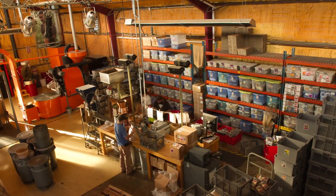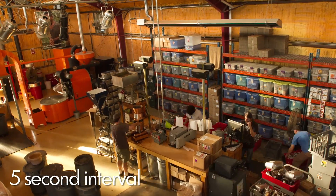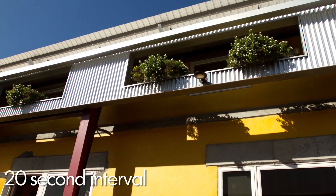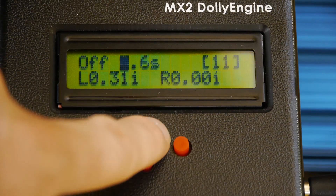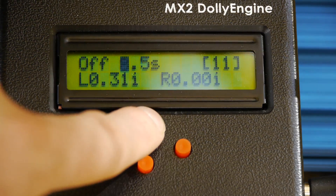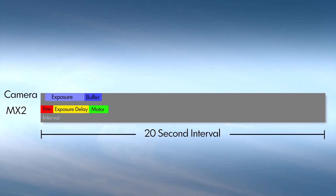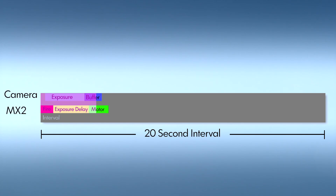To decide on the interval for your time-lapse it really depends on the subject and desired effect. To show the frenetic energy of a group of people, a few seconds can work. To show more change over time — like the movement of shadows — something like 20 to 30 seconds might be a good choice. For this example I want to use 20-second intervals to really emphasize the movement of light and shadows over this abandoned car. So I'll set the interval to 20. During the cycle, the MX2 will trigger an exposure for 100 milliseconds, pause for the 2-second exposure delay, then the motor will move, with the rest of the time waiting for the 20-second mark before repeating.